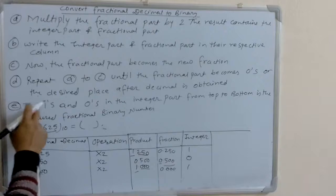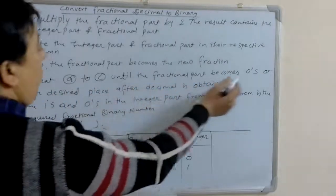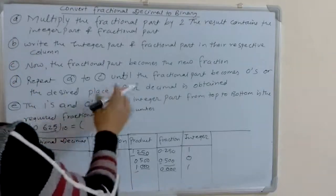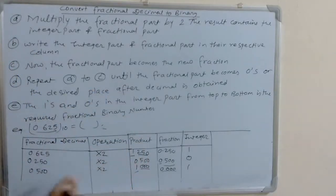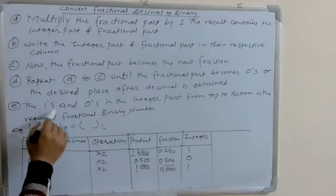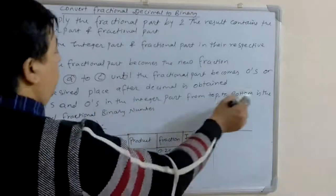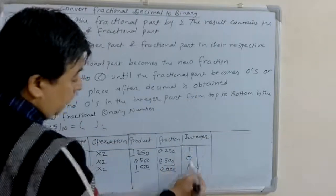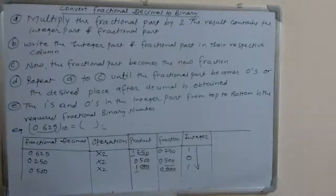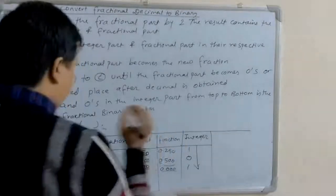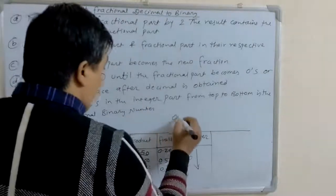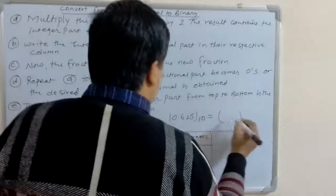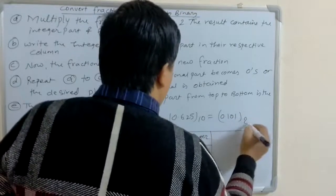When the fractional part becomes 0, we stop. The ones and zeros in the integer part from top to bottom is the required fractional binary number. Reading top to bottom, this gives the fractional binary number. Therefore, 0.625 decimal is equivalent to 0.101 binary.